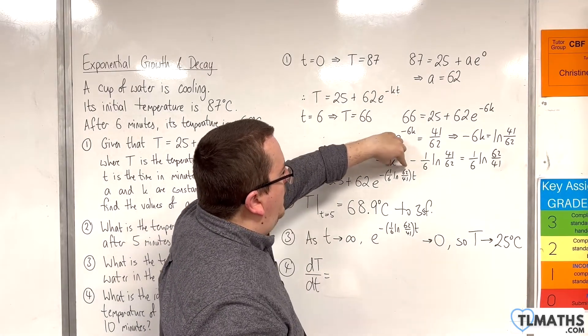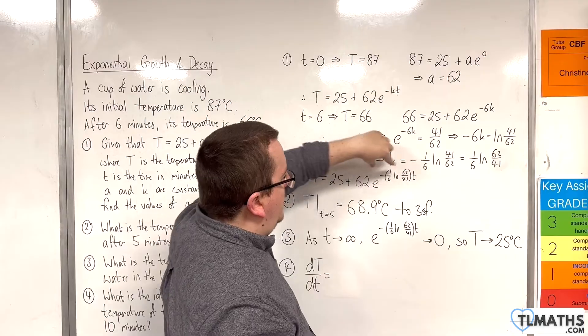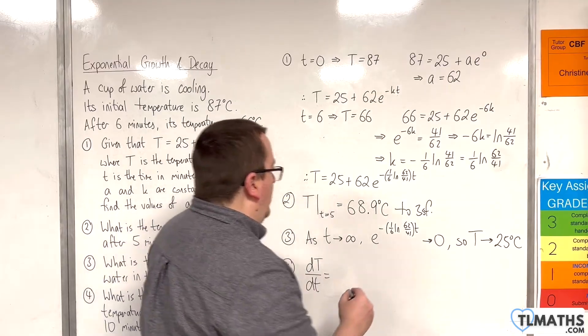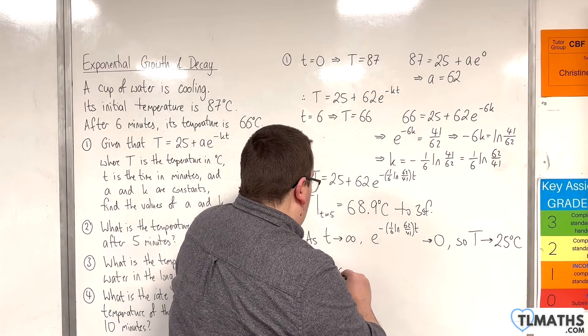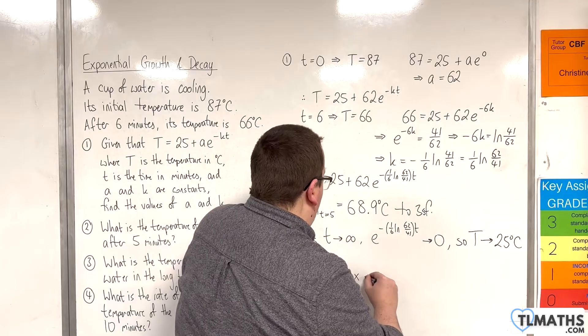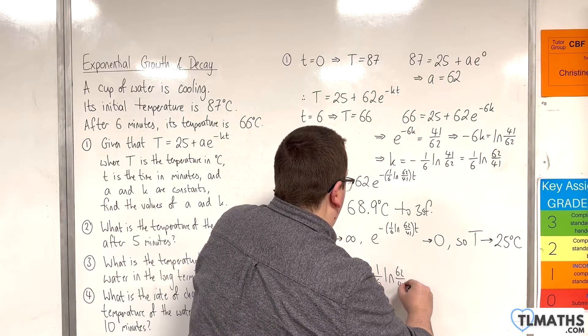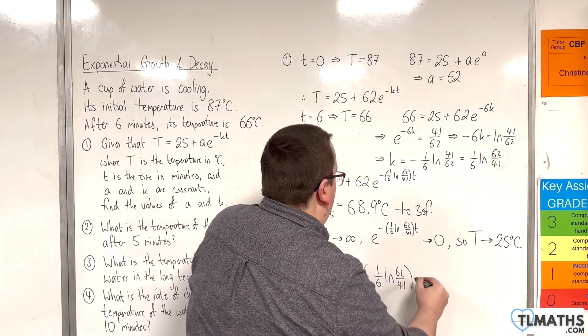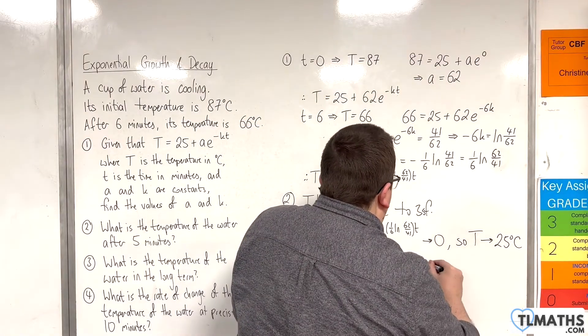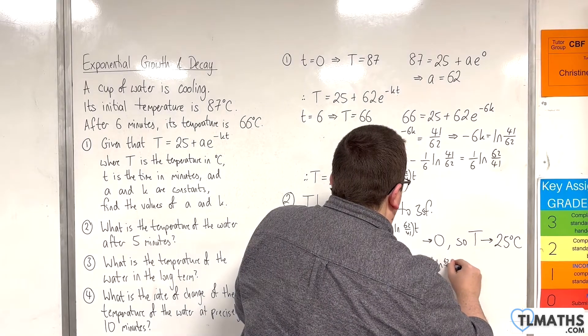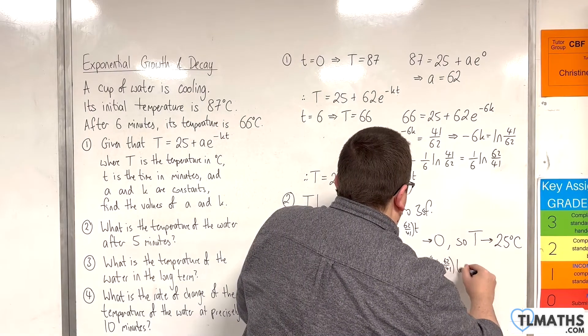So what we're going to have is that the coefficient of T will come down to the front, and we will get 62 times by minus 1 sixth times the natural log of 62 over 41, times by e to the minus 1 sixth natural log of 62 over 41, times by t.